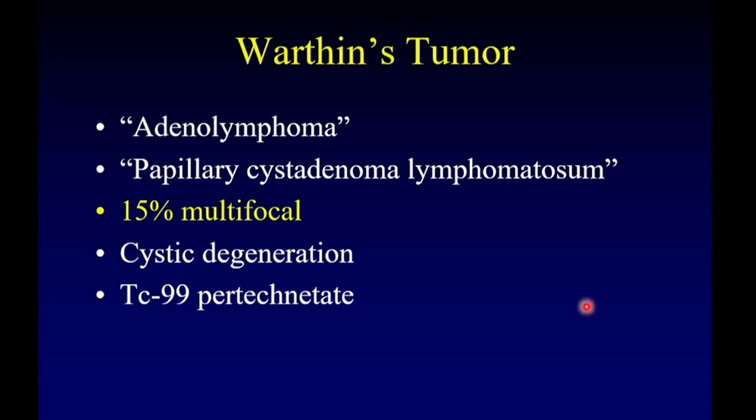Warthin's tumor has several synonyms: adenolymphoma and papillary cystadenoma lymphomatosum. Warthin's tumor is famous for being multifocal — it may be bilateral or multiple within the same gland — but in fact only 15% of Warthin's tumors are multifocal. It undergoes cystic degeneration and can be detected using technetate scans, although we don't often use those for that purpose.